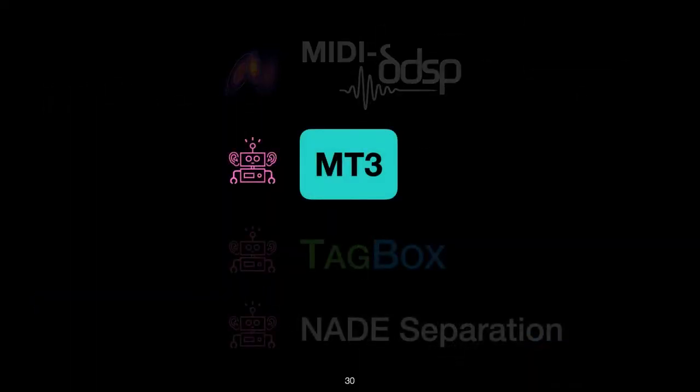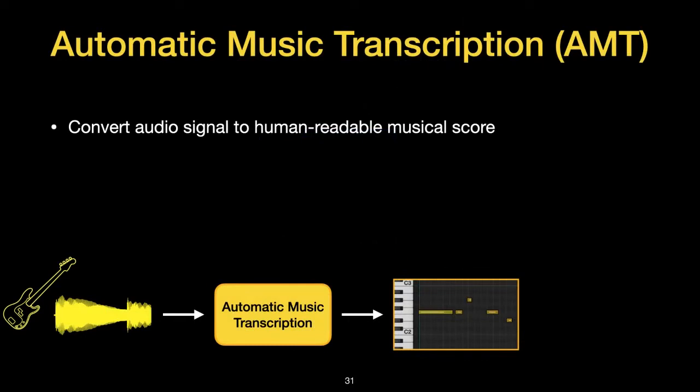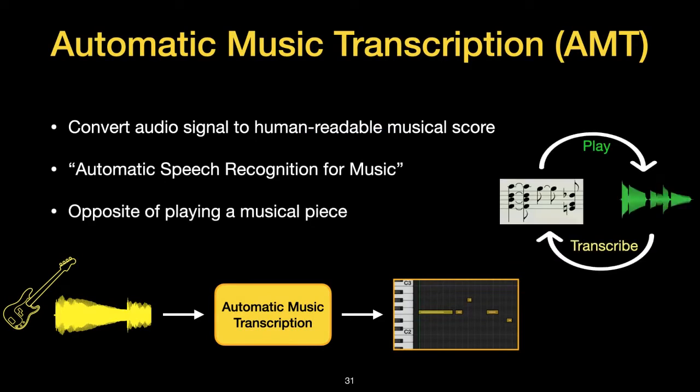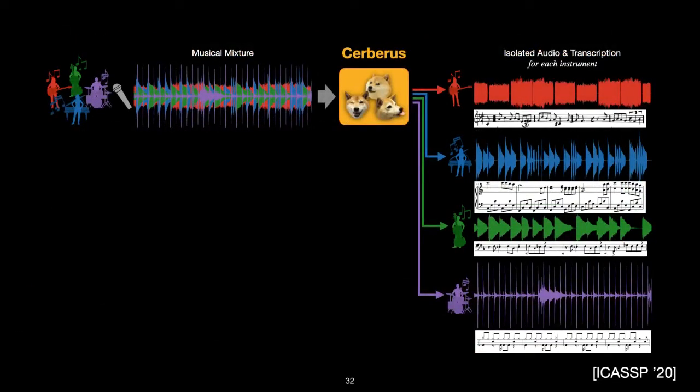But before we completely dive into MT3, I'm just going to define what automatic music transcription is. So automatic music transcription is the task of converting an audio signal into a human readable musical score or a transcription. I like to think of this as the musical analog to speech recognition systems that turn recordings of human speech into text data. You can see an example of transcription shown at the bottom of the screen, where a transcription system turns the recording of the yellow bass guitar into a piano roll transcription in the MIDI format. So another neat thing I like to think about transcription is that it's the opposite of playing a piece. When you play a piece, you turn a set of notes into audio. And when you transcribe a piece, you turn audio into a set of notes.